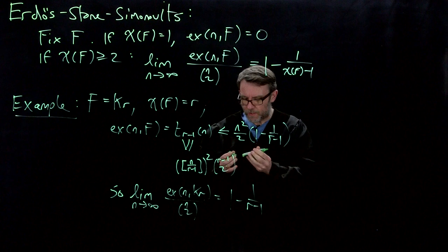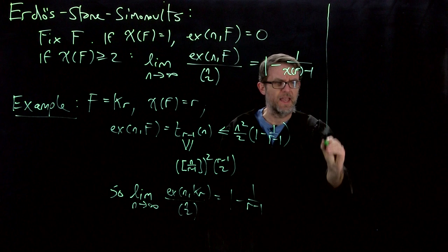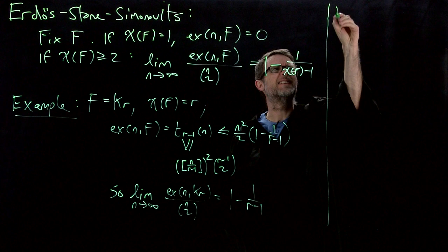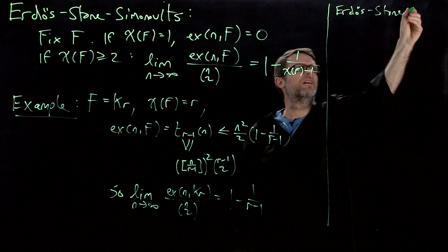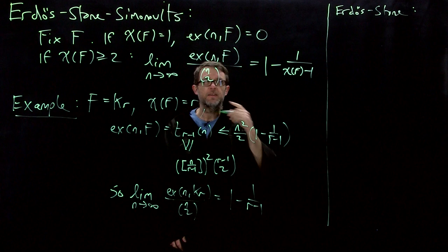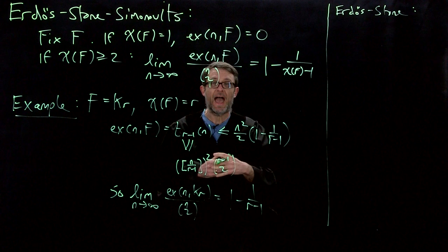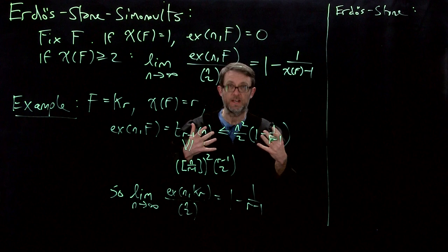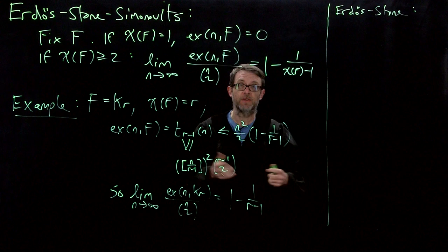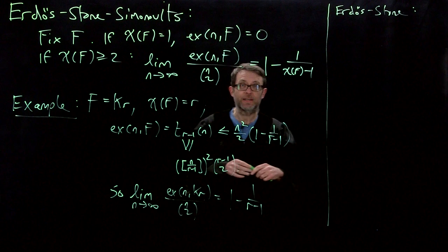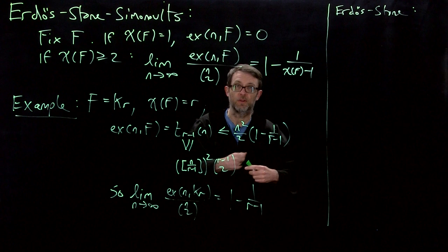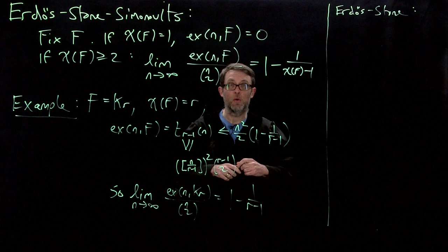The key point in the Erdős-Stone-Simonovits theorem is a theorem due to Erdős and Stone. Just a little while after Turan proved his theorem, Erdős and Stone were considering what happens if you take the largest number of edges that avoids a complete graph on R vertices and add in some more edges. They suspected that you would actually start getting some very rich structures — not just single copies of K_r here and there, but really very rich structures — if you added only a few more edges beyond the threshold for a single copy of K_r.